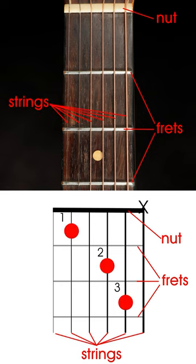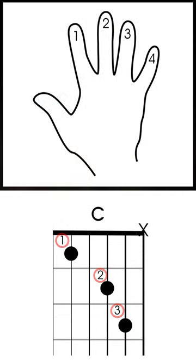The dots or solid circles on a chord chart represent the tips of the fingers, and the numbers alongside these are which fingers to use. The fingers are numbered 1 to 4.